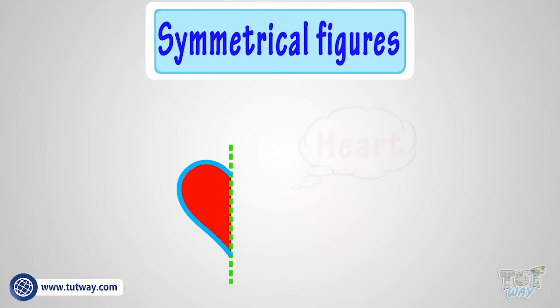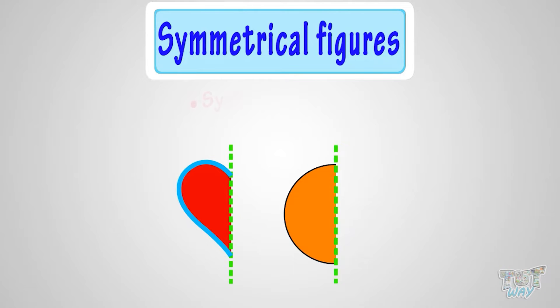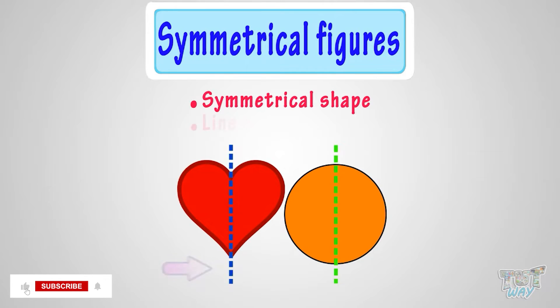When you can fold a shape in half and one half exactly covers the other half, we can say that the shape is symmetrical and the fold line is the line of symmetry.